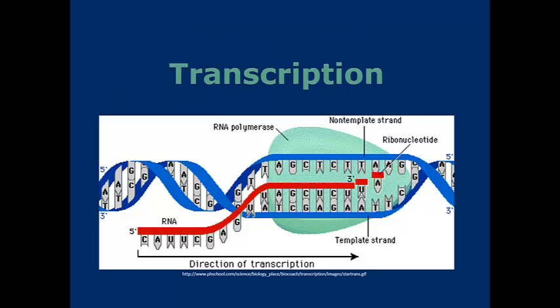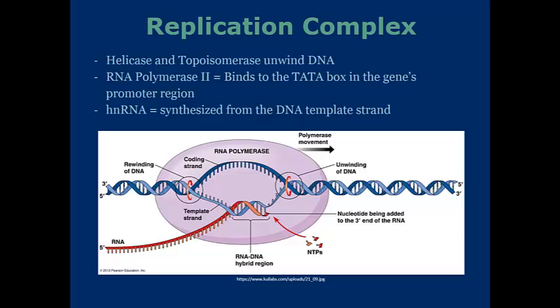Transcription is very similar to the replication of DNA. However, it creates RNA instead of DNA. Note that it's going to be semi-conservative either time. The replication complex has helicase and topoisomerase, much like with DNA replication. However, instead of DNA polymerase, you have RNA polymerase, which binds to the TATA box in the gene's promoter region, and thus has a subsequent replication.